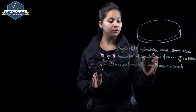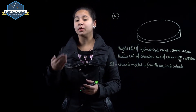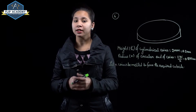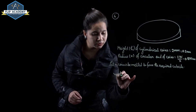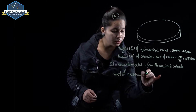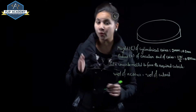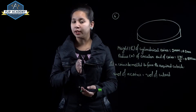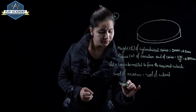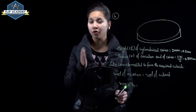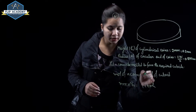Assume n coins are melted to form the required cuboid. So: volume of n coins = volume of cuboid. Coins are cylindrical, so n × π r² h = l × b × h.